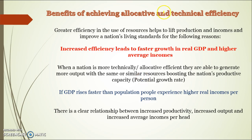The benefits of achieving allocative and technical efficiency: greater efficiency helps to lift production and therefore promotes higher incomes. Incomes are generated through higher production — if we increase our efficiency, that should lead to increased real GDP growth and therefore higher average incomes. If we can maximise output per unit of input, we can grow our nation's productive capacity, and if GDP grows faster than population, we'll experience higher real GDP per capita.